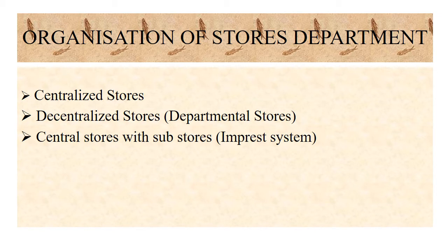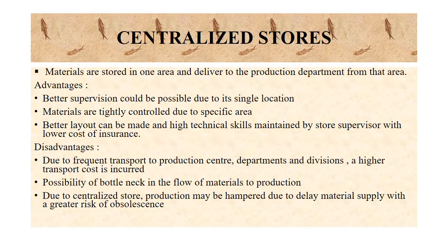When the organization receives raw materials in one warehouse or store but supplies the raw materials to several production centers or departments and divisions, it is called a centralized store. When the management of the company is very strict about material control, they follow the centralized management system.